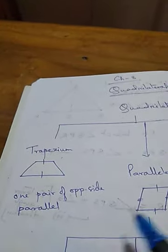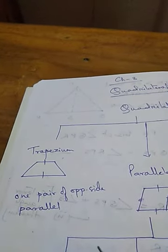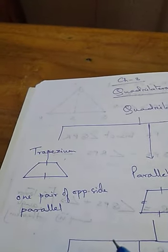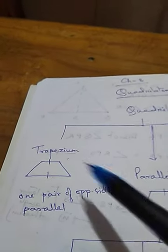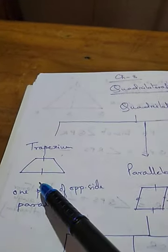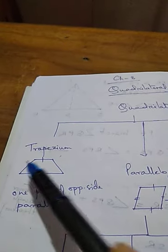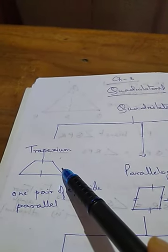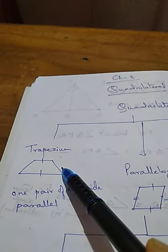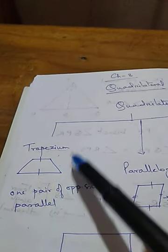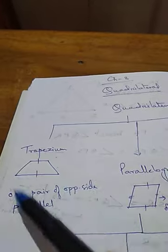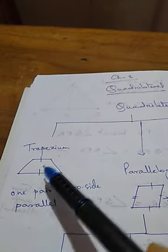I think you know from chapter 6 what parallel lines are. So in a trapezium, only one pair of opposite sides is parallel, and the other pair is not parallel. If you get a quadrilateral like that, it is called a trapezium.